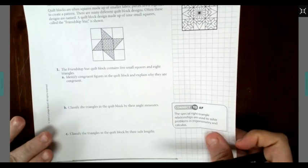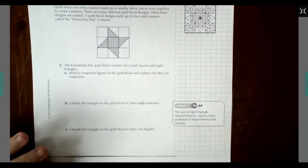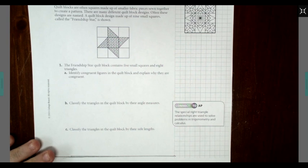Number 1. Starting with number 1, it says the Friendship Star quilt contains five small squares and eight triangles. Part A: Identify congruent figures in the quilt block and explain why they are congruent.